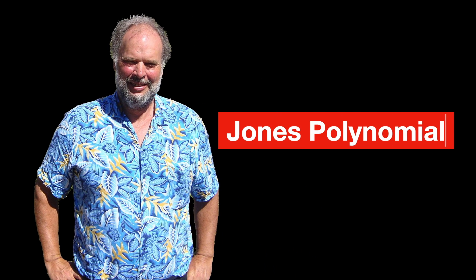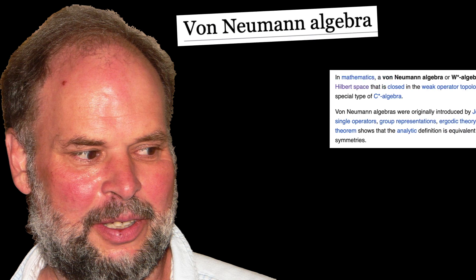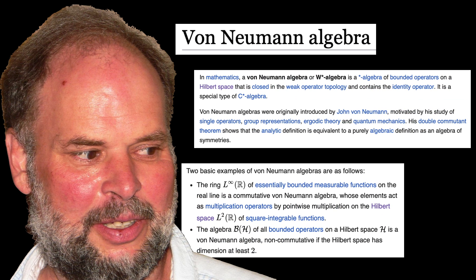But there was a powerful breakthrough in 1984 when Vaughn Jones introduced the Jones polynomial. It's a knot invariant, like the Alexander polynomial. But it is distinguished by its ability to capture more subtle features of knots and links. Vaughn Jones developed the Jones polynomial while working on von Neumann algebras in operator algebra, a completely different area of mathematics. But it ended up being groundbreaking for knot theory.